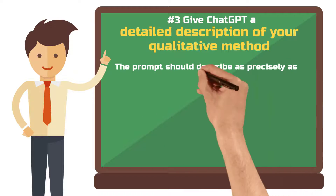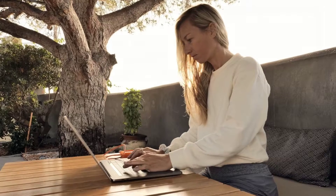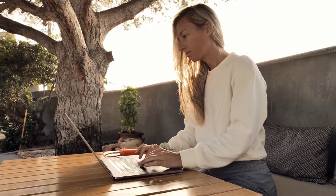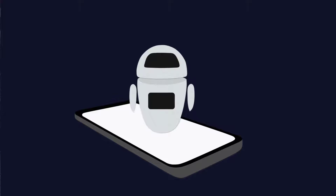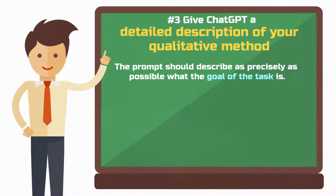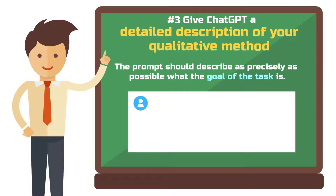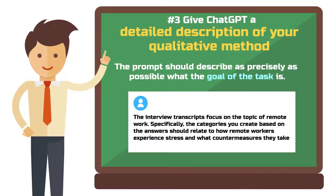Step 3: Give ChatGPT a detailed description of your qualitative method. The prompt should describe as precisely as possible what the goal of the task is, including aligning the prompt with your specific goal. For example, if your interviews are about remote work and stress, you should formulate your prompt accordingly. Always keep in mind that ChatGPT only knows as much about the task as the information you provide. For instance: "The interview transcripts focus on remote work — specifically, the categories should relate to how remote workers experience stress and what countermeasures they take."